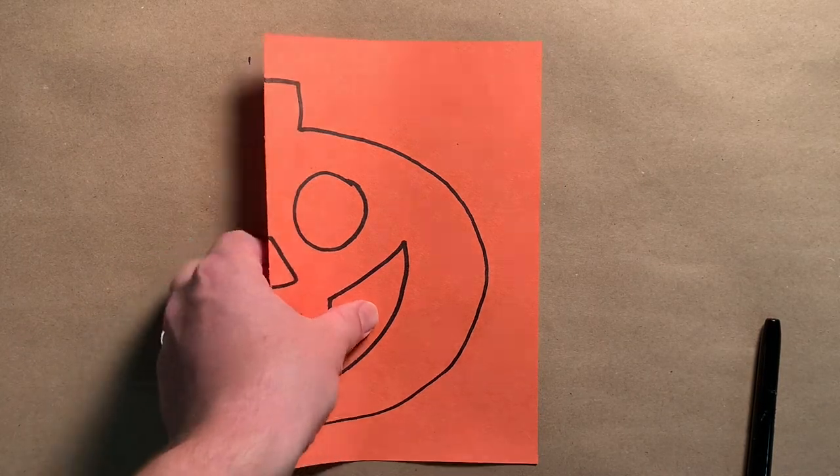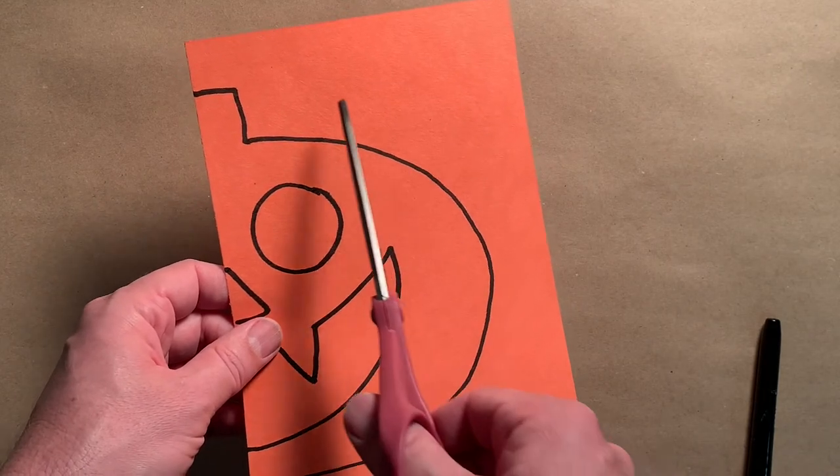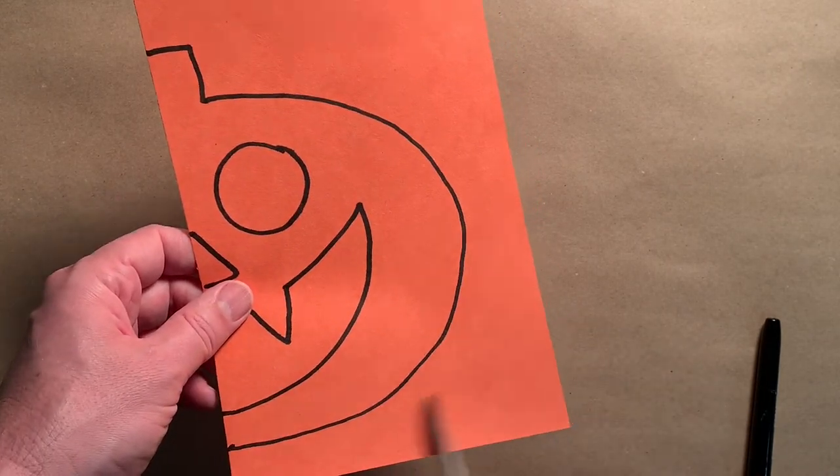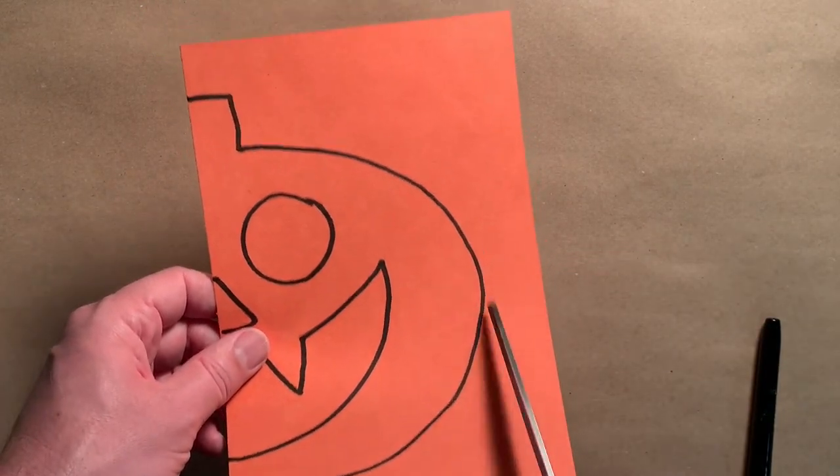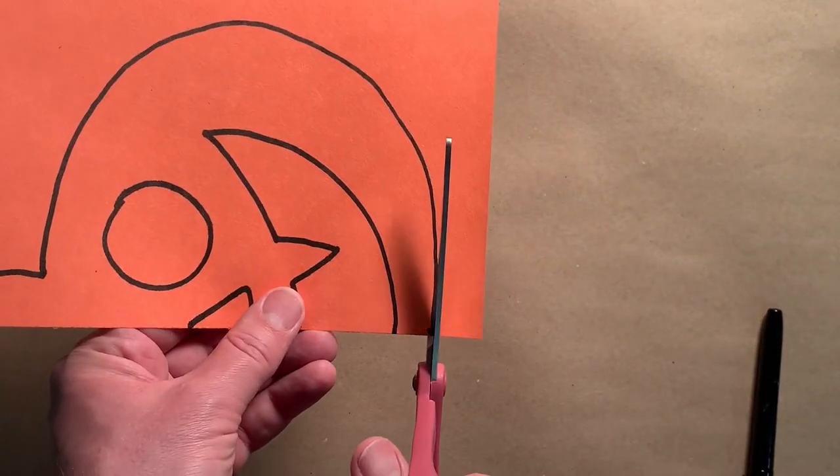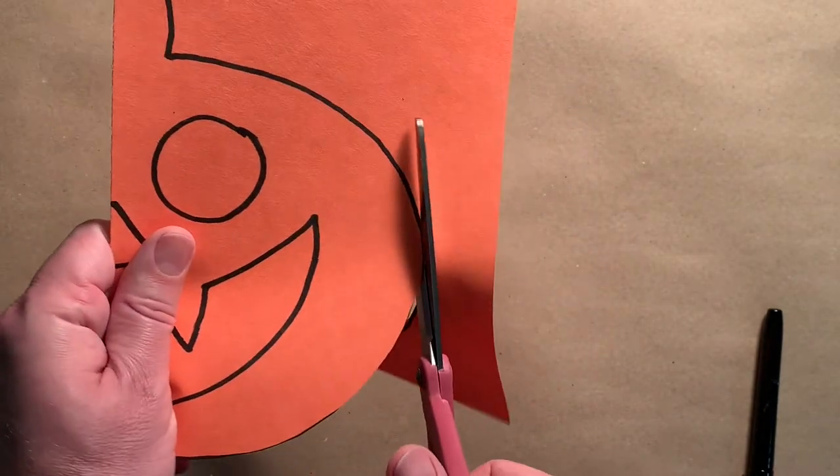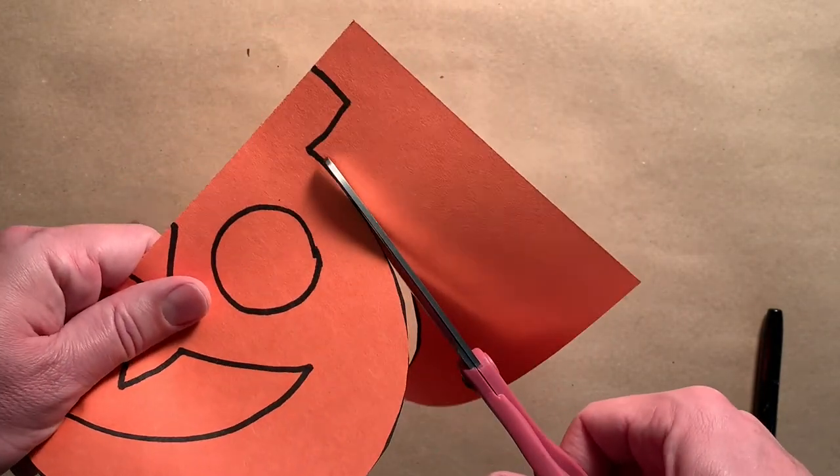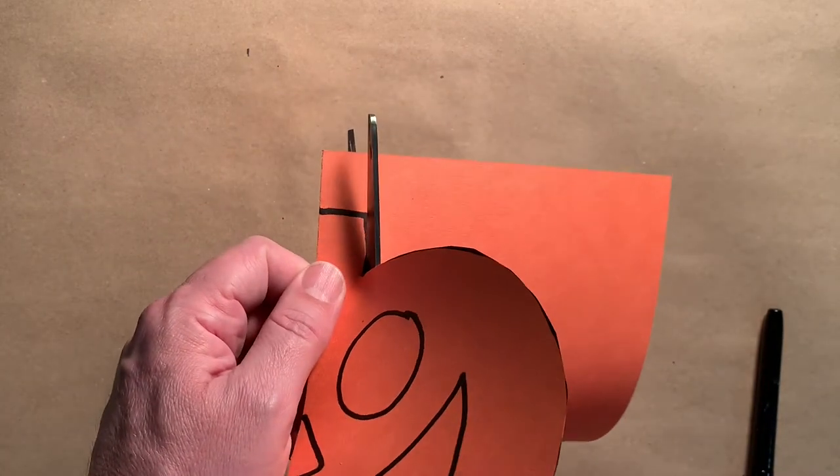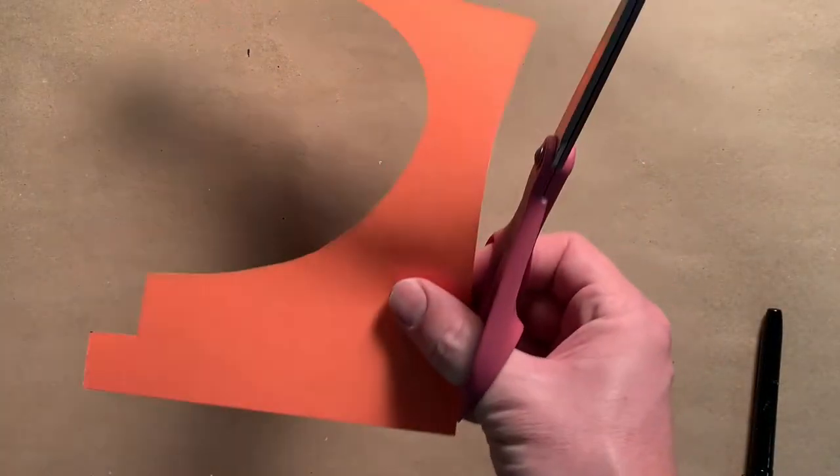Now it's time to cut out your pieces of your pumpkin. As we're cutting today, remember, we're not going to have any trash. All of the paper, even this outside part, we're going to call that the frame, we're going to need. So start by cutting out the shape of the pumpkin, that big curved line that you drew. Take your time, watch your fingers. We're going to save this part.